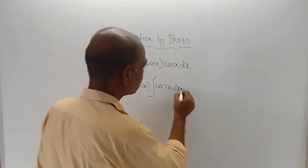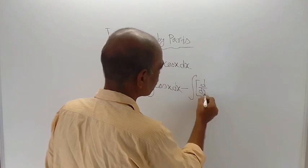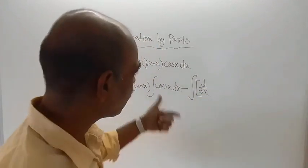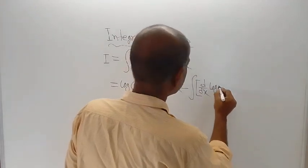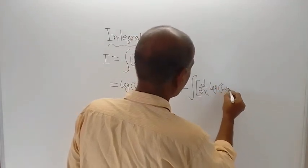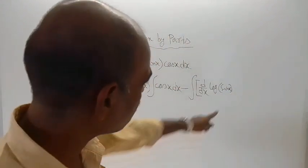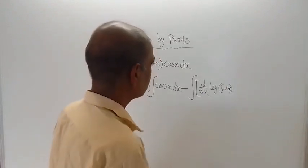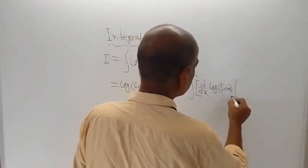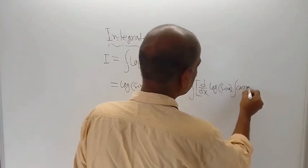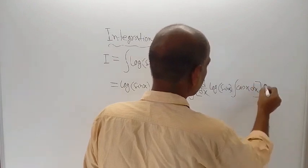Minus the integration of d dx of the first function. d dx means the derivative of the first function, which is log of sin x. Then multiplied with the integration of cos x dx, which is the second function. Then close the bracket, then again dx.